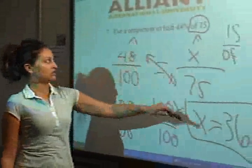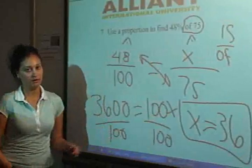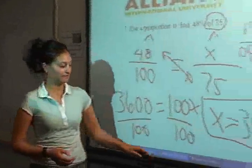And that would be 36 is 48% of 75. MG17 out. Perfecto.